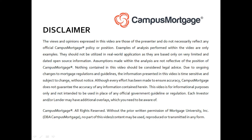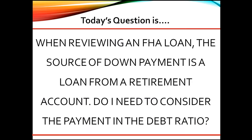Hi, everyone. Welcome back to Ask the Instructor, presented by Campus Mortgage. Today's question is, when reviewing an FHA loan, the source of down payment is a loan from a retirement account. Do I need to consider the payment in the debt ratio?